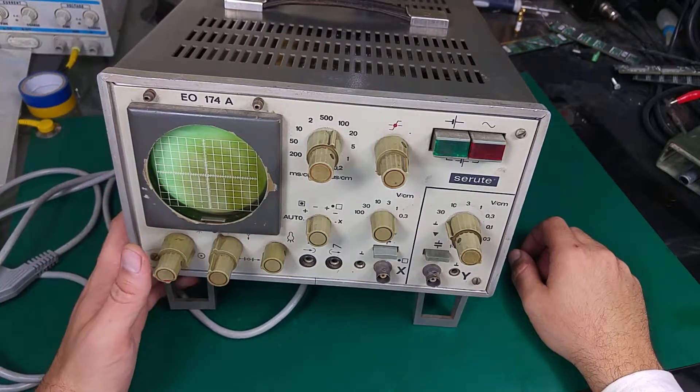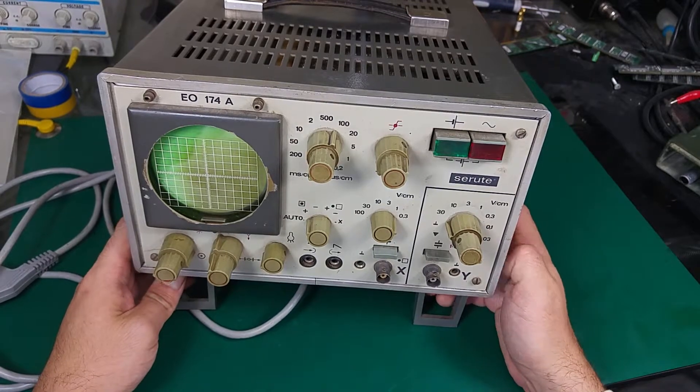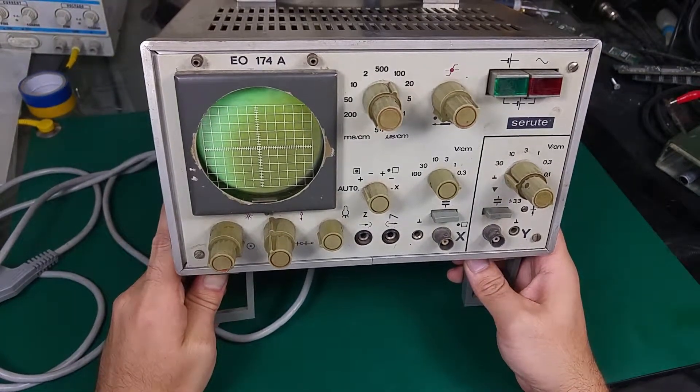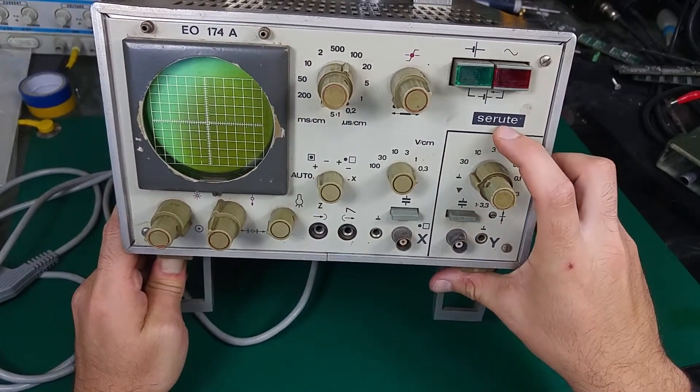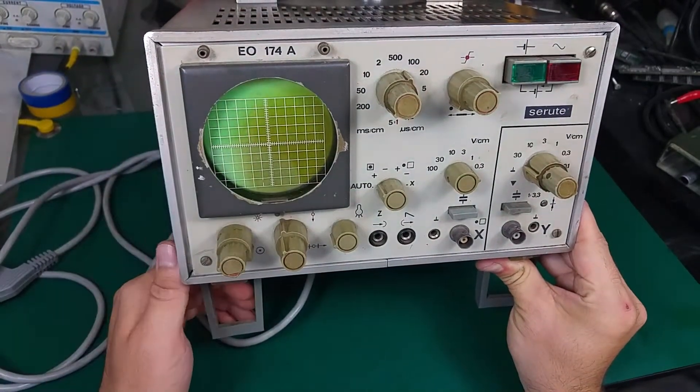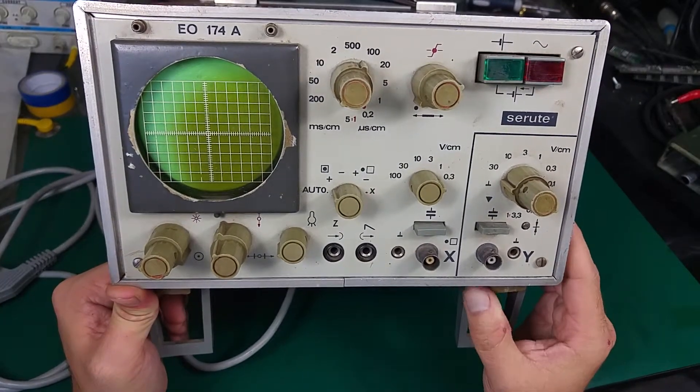Hello guys, today I would like to show you quite an interesting oscilloscope. This is a very old device made by a German company called CRUTE, and the model number is over there. As you can see, there is nothing